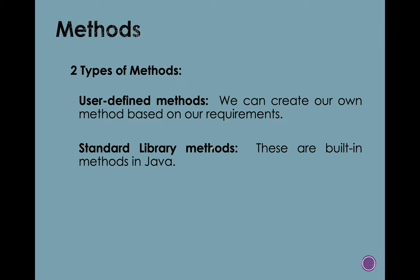Let's talk about the types of methods. There are two types. The first type is what we call user-defined methods — these are methods that we can create on our own depending on our requirements. We also have standard library methods, like System.out.println, which is a built-in method in Java. We also have square root, and there are many more built-in methods in Java. For now, we will focus on user-defined methods.